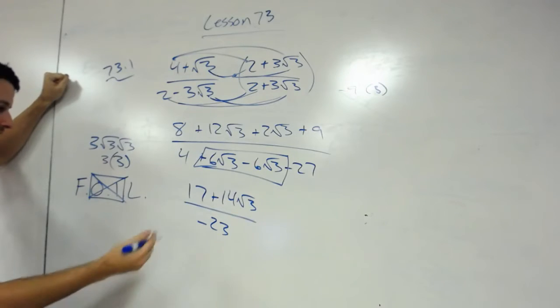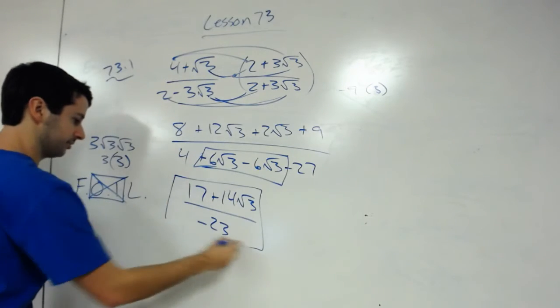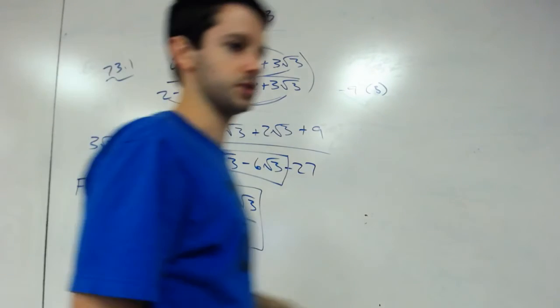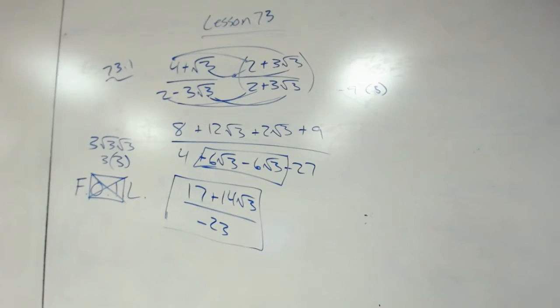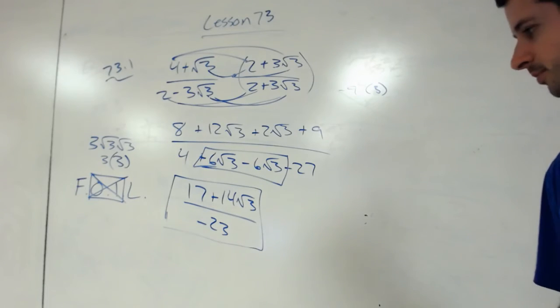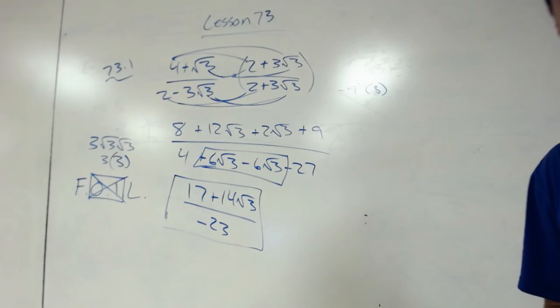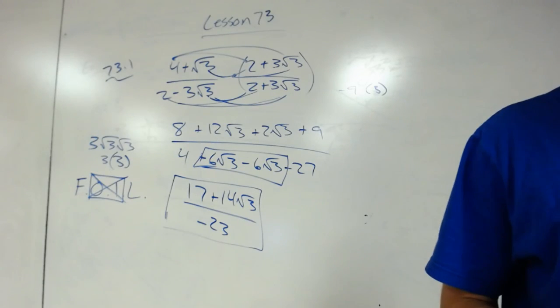But I do not believe this can be simplified any further, so I'm checking, make sure. That would be your answer: 17 plus 14√3 over negative 23. And that's really all there is to Lesson 73.